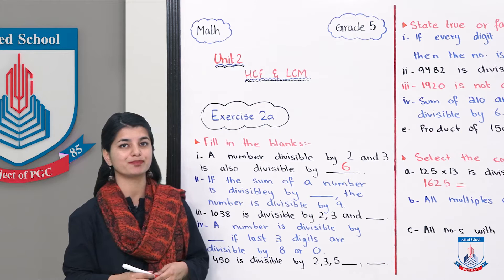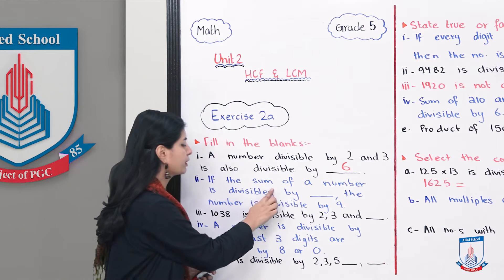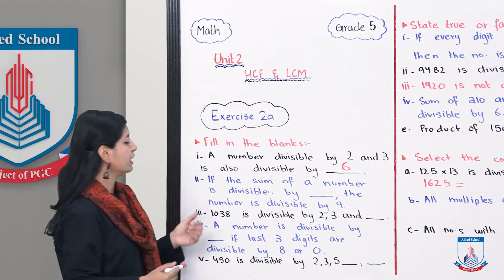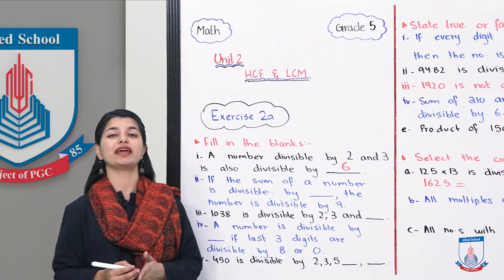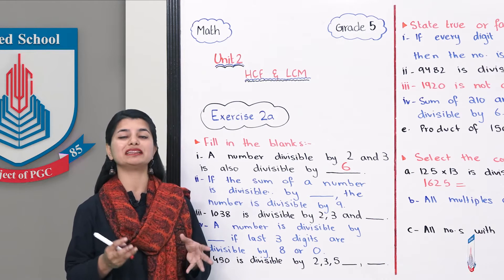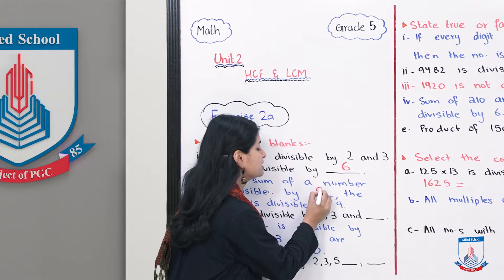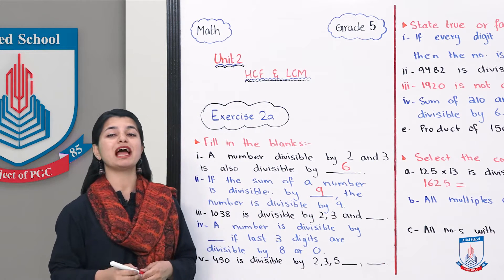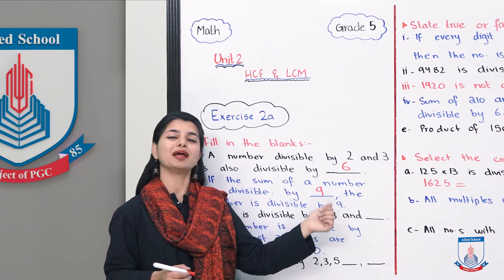Second blank is: if the sum of a number is divisible by dash, the number is also divisible by 9. If a number is divisible by 9, it means that the sum of all the digits is divisible by 9. So we will write 9 in this blank, because if the sum is divisible by 9 then it will be divided by 9.